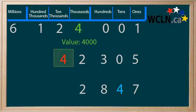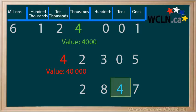The 4 in the next number, 42,305, is in the ten thousands place and is worth 40,000. The 4 in the final number, 2,847, is in the tens place. 4 tens has a value of 40.